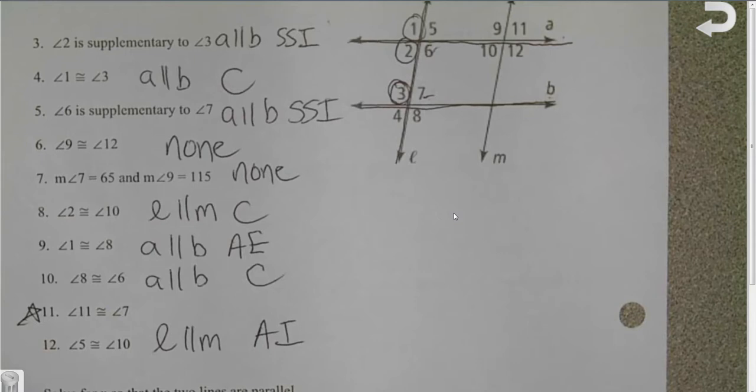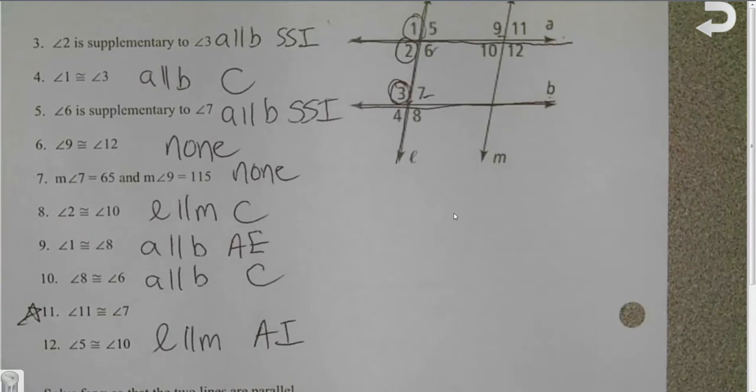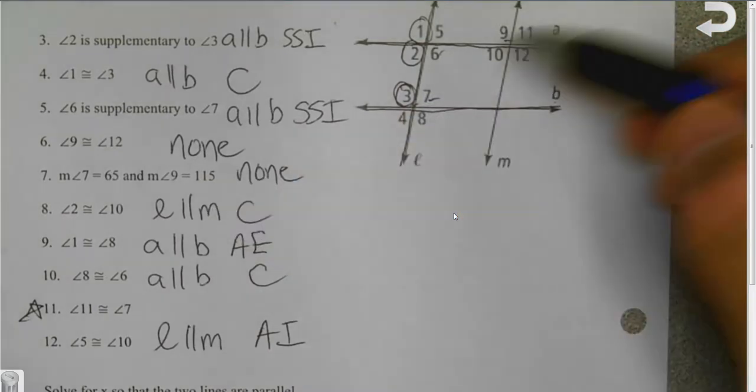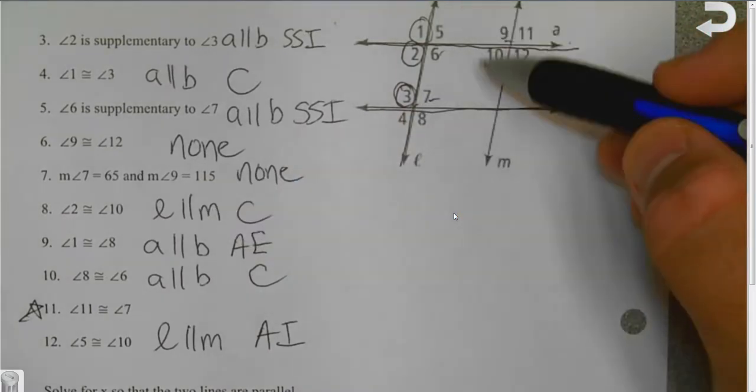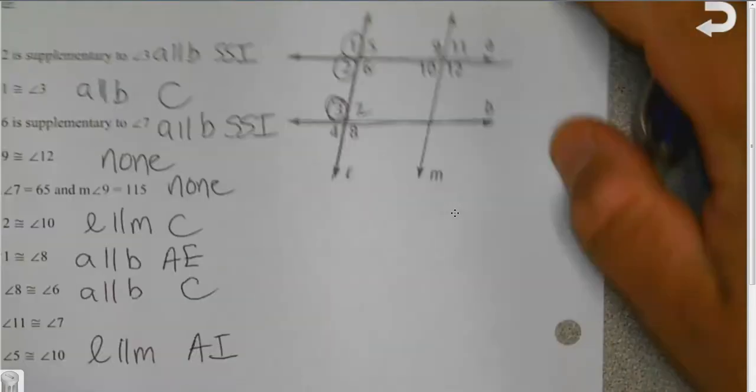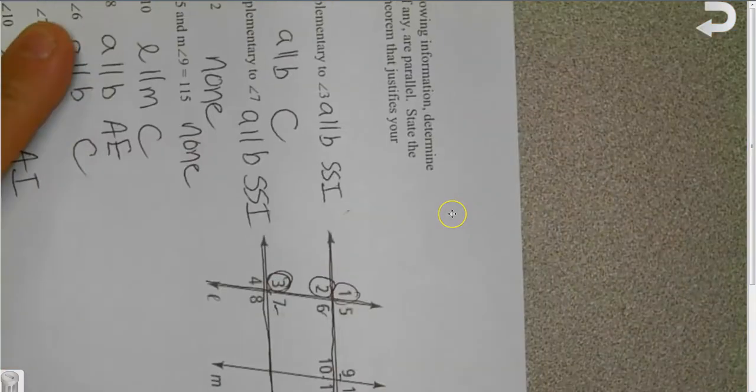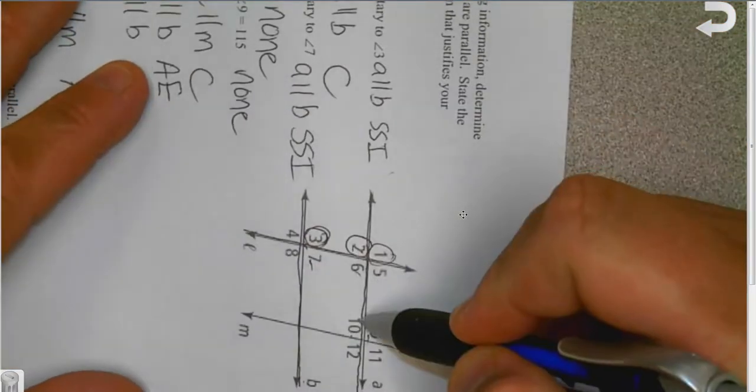For 7, 7 and 9, they don't work together. It's two different lines. Proves nothing. 8, L and M. Because 2 and 10 are corresponding. And I know you're like, wait a minute. How is it corresponding? Well, if I turn it this way, 2 is the exact same angle as 10.